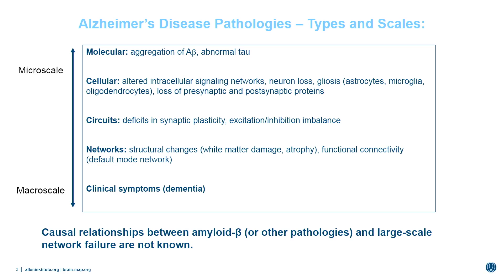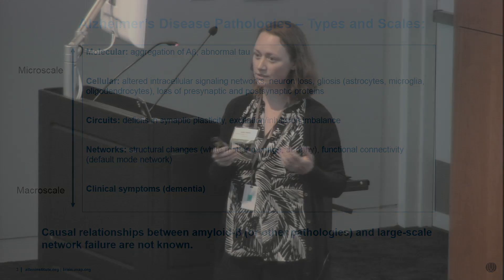Alzheimer's disease is also one of the neurodegenerative disorders characterized by the abnormal accumulation and aggregation of proteins — it's a proteinopathy disease. In particular, there are two most-studied pathological proteins: the amyloid beta peptide, derived from the amyloid precursor protein and cleaved to produce this potentially toxic peptide, which accumulates extracellularly into plaques visible postmortem; and the microtubule associated protein tau, which becomes abnormally phosphorylated and accumulates into intracellular neurofibrillary tangles.